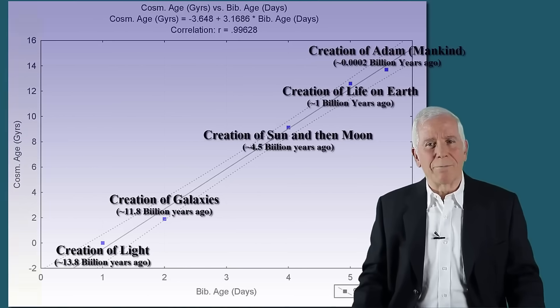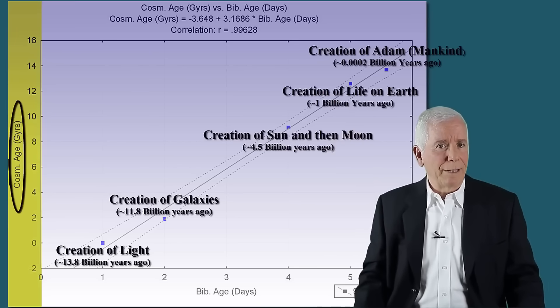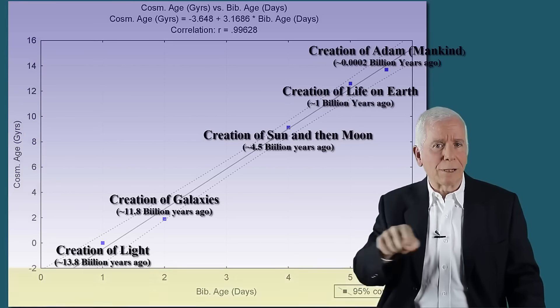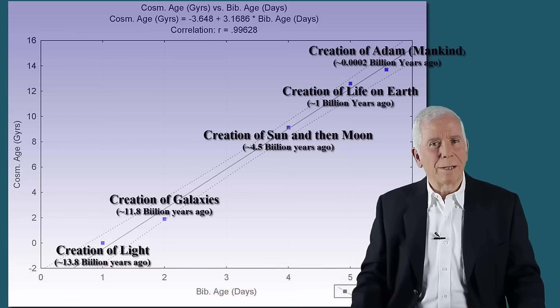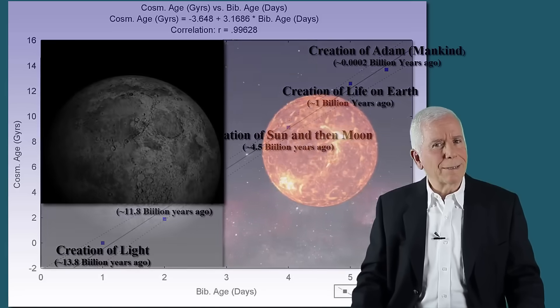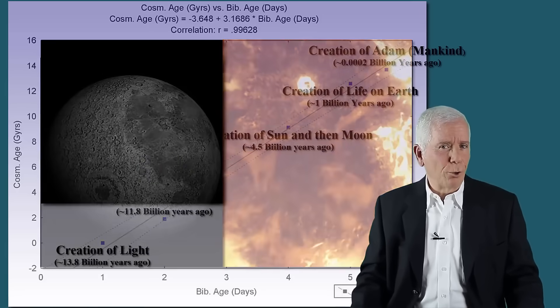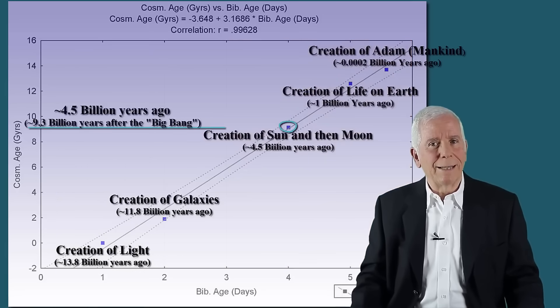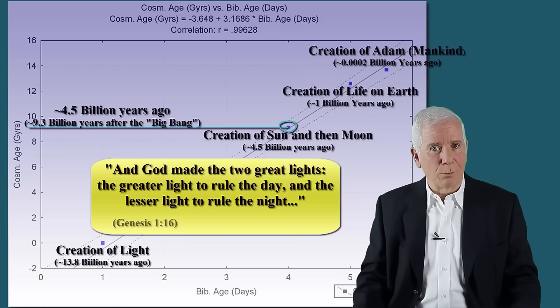On this plot, the vertical axis represents cosmological time in billions of years since the Big Bang, and the horizontal axis represents biblical time in terms of days. Note that according to modern science, moon and the sun formed about four and a half billion years ago. Therefore, the two points that represent the greater light toward the day and the lesser light toward the night, Genesis 1:16,